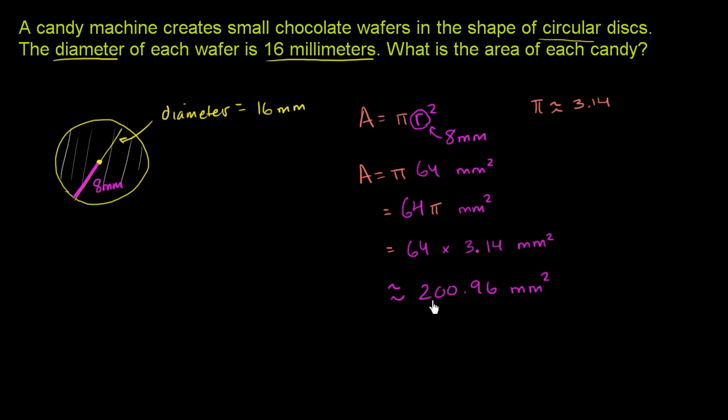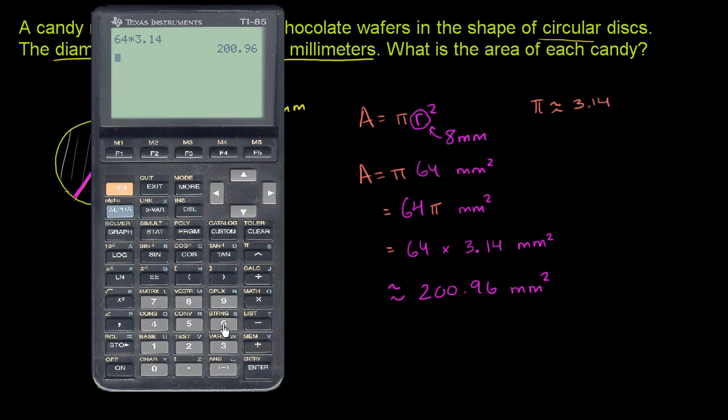Now, if we want to get a more accurate representation of this, pi actually just keeps going on and on and on forever. We could use the calculator's internal representation of pi. In which case, we'll say 64 times...